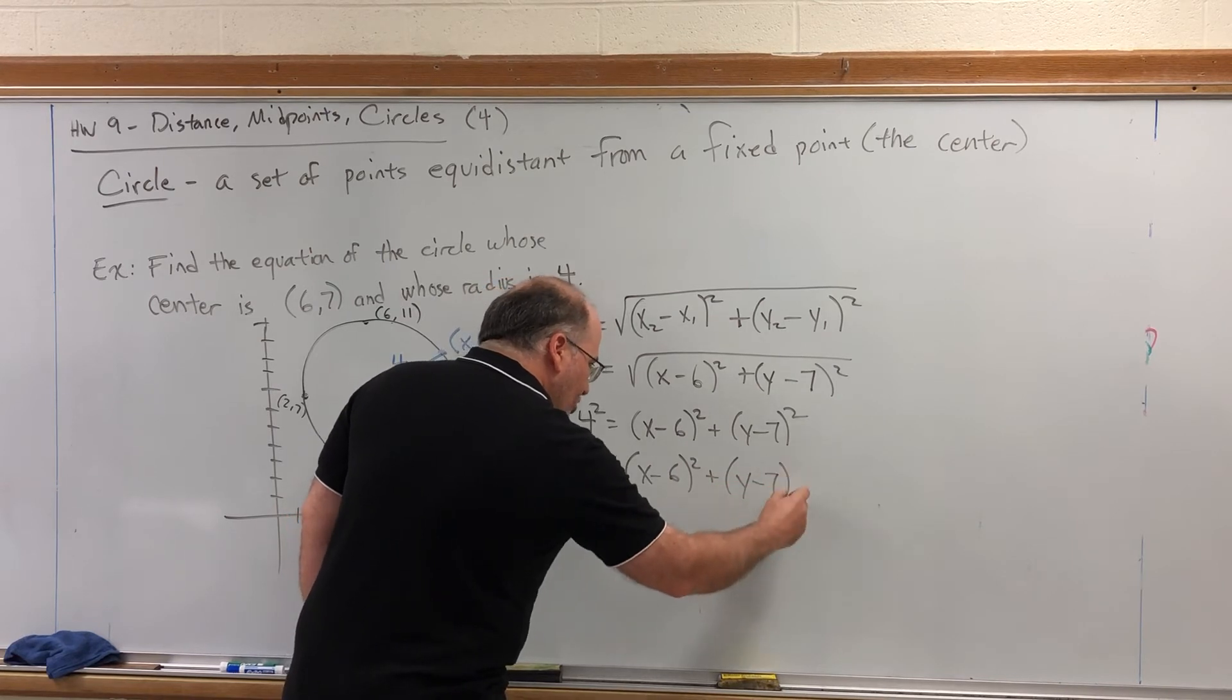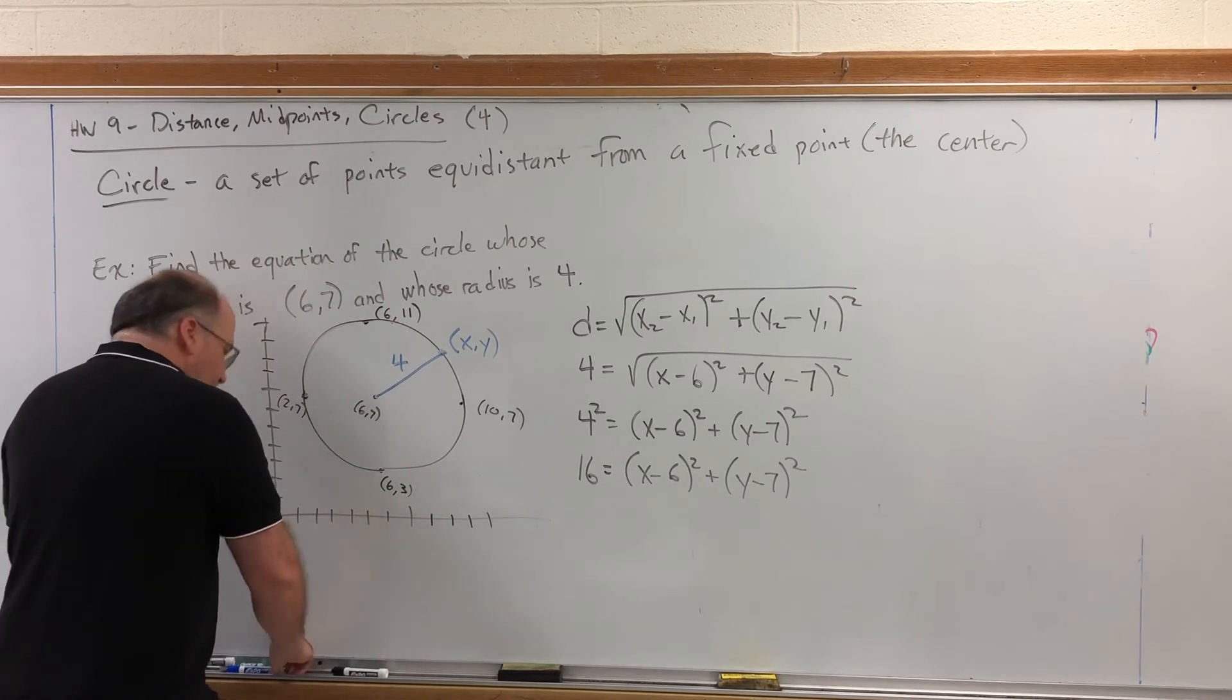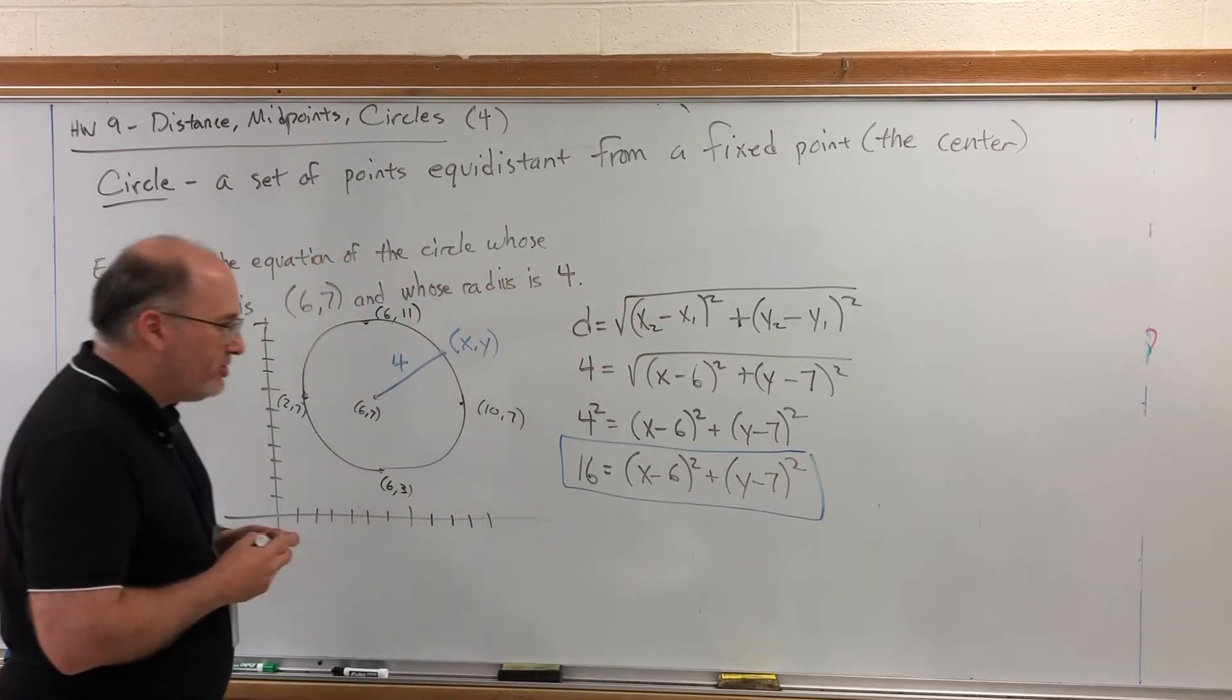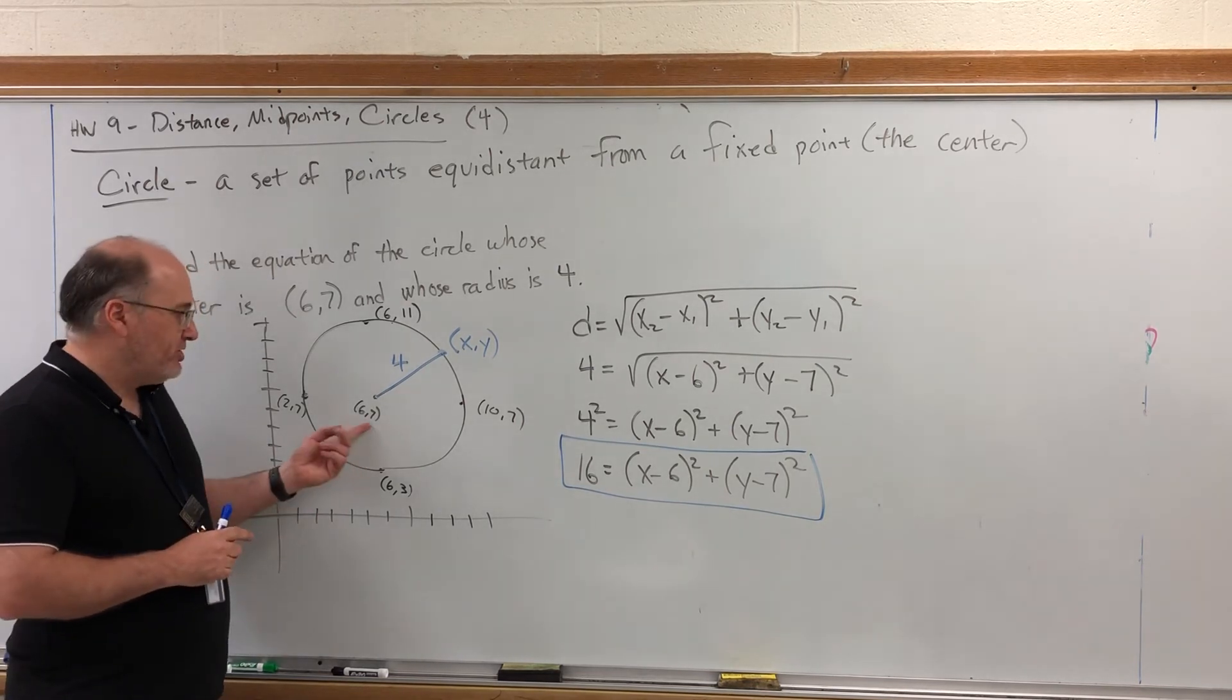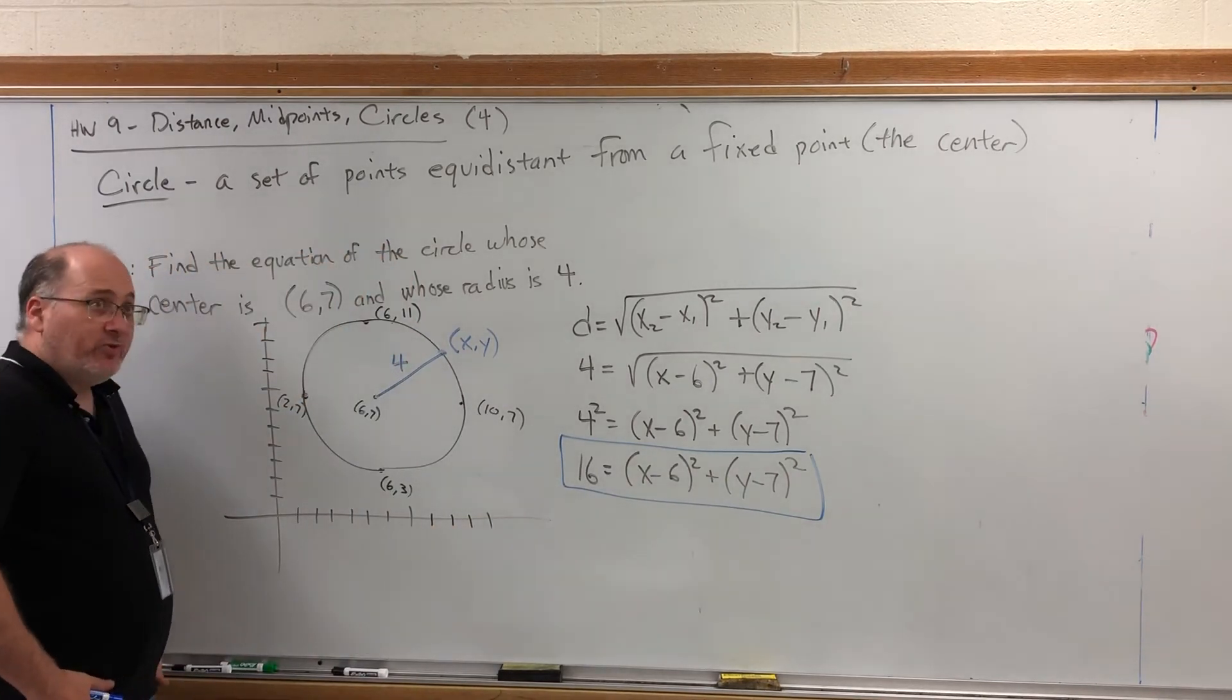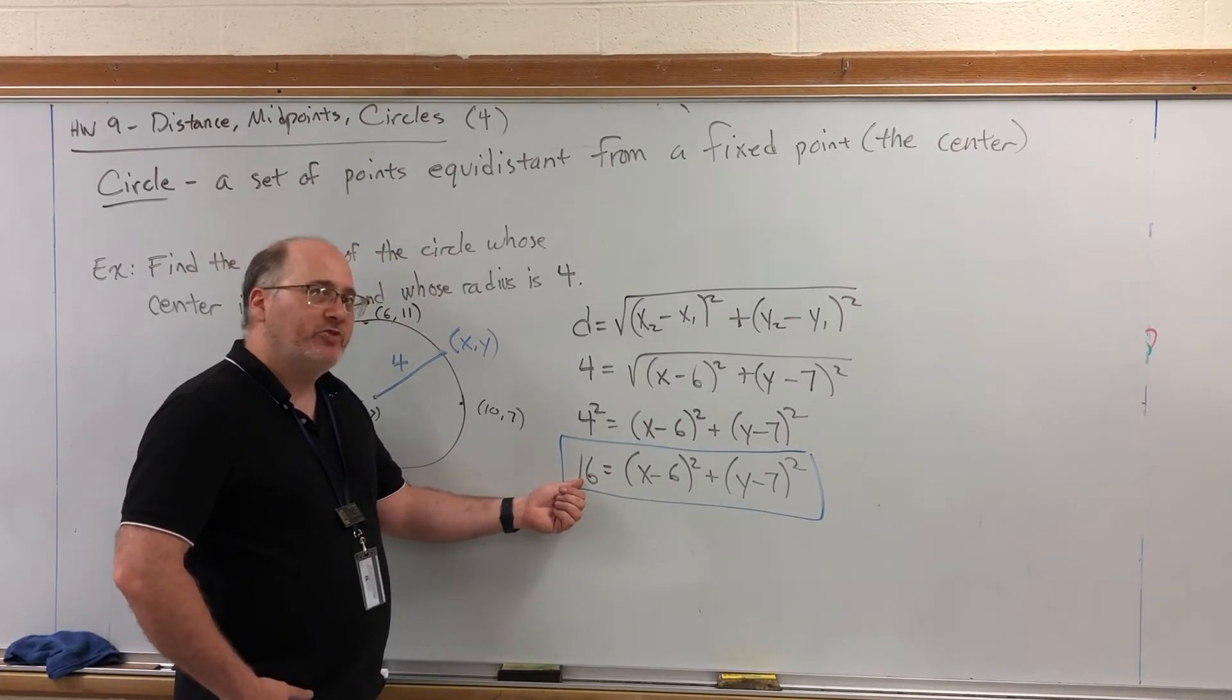Now, if you're thinking, should we foil each parenthesis? You could. I wouldn't. Because you'd be destroying something that is pretty convenient. If you'll notice closely, this equation of the circle still contains information. It contains the coordinates of the center, 6 and 7. And, in a subtle way, it also contains the radius. Now, I know the radius is 4 and 4 is not in here, but it sort of is because it's the square root of 16.